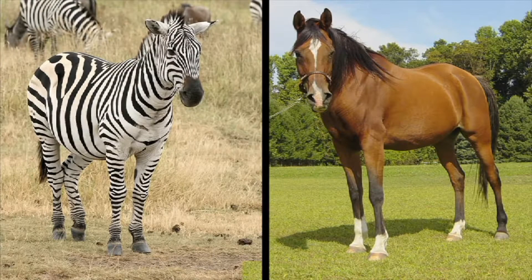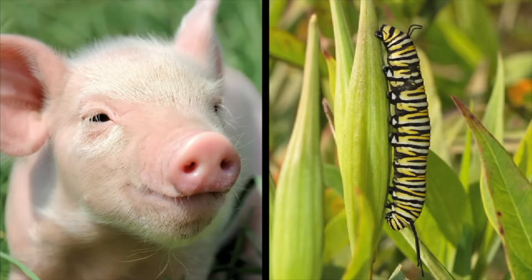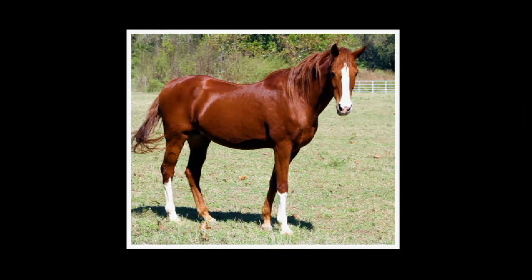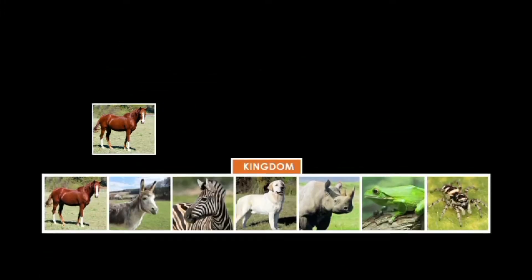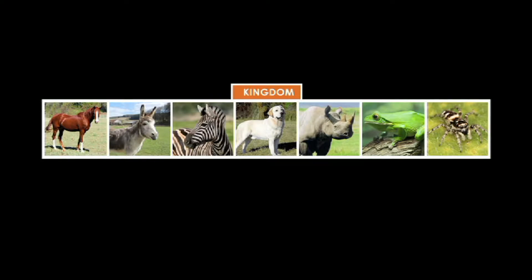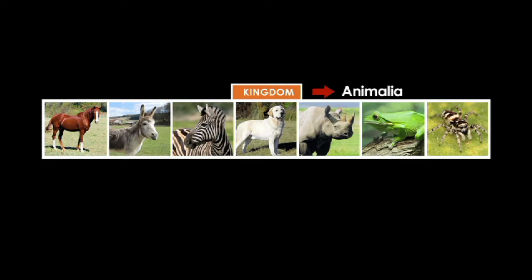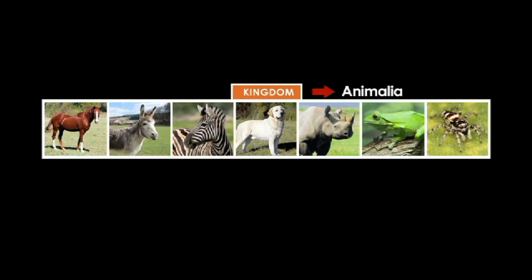Scientists use biological classification to understand how similar or how different one living organism is from another. This is how scientists would classify horses. The first category, kingdom, is the largest group. Horses and all other animals are included in the kingdom animalia, or animal kingdom.